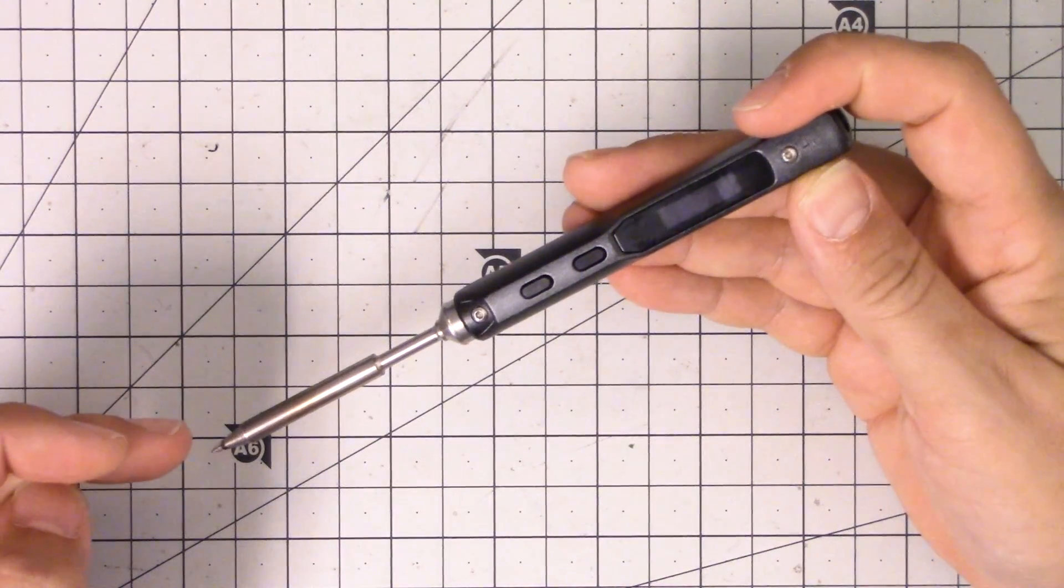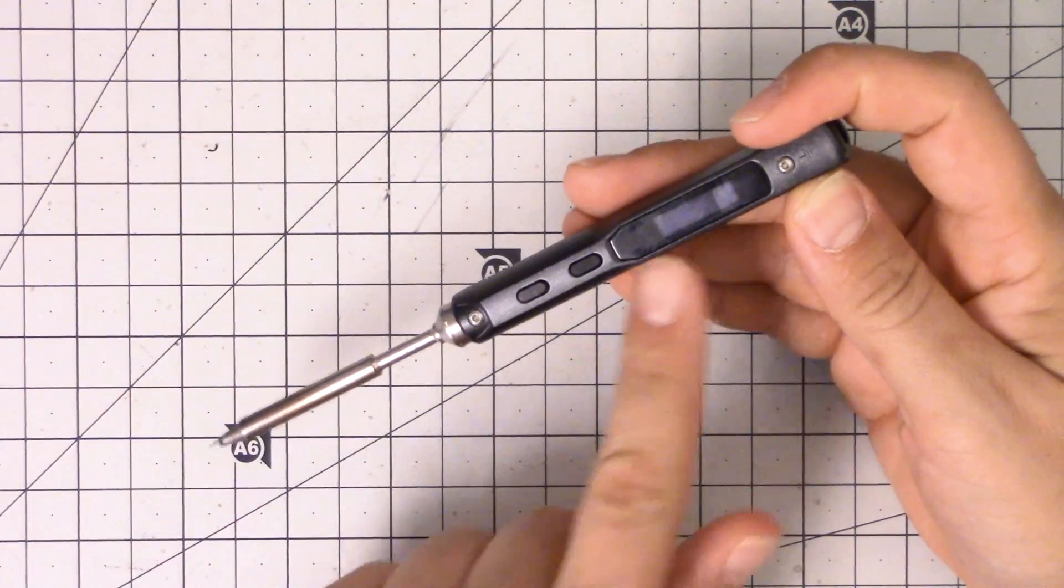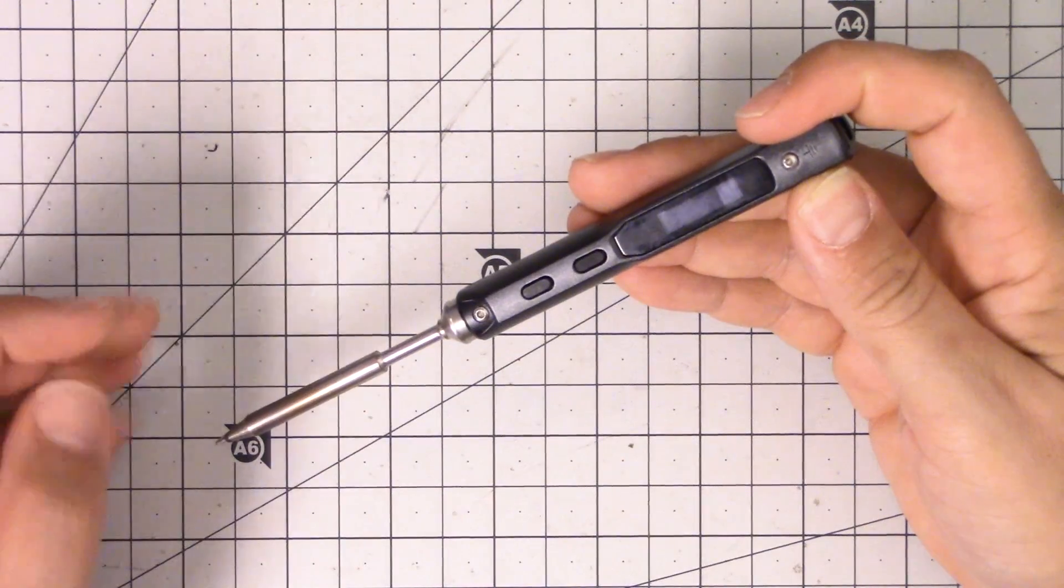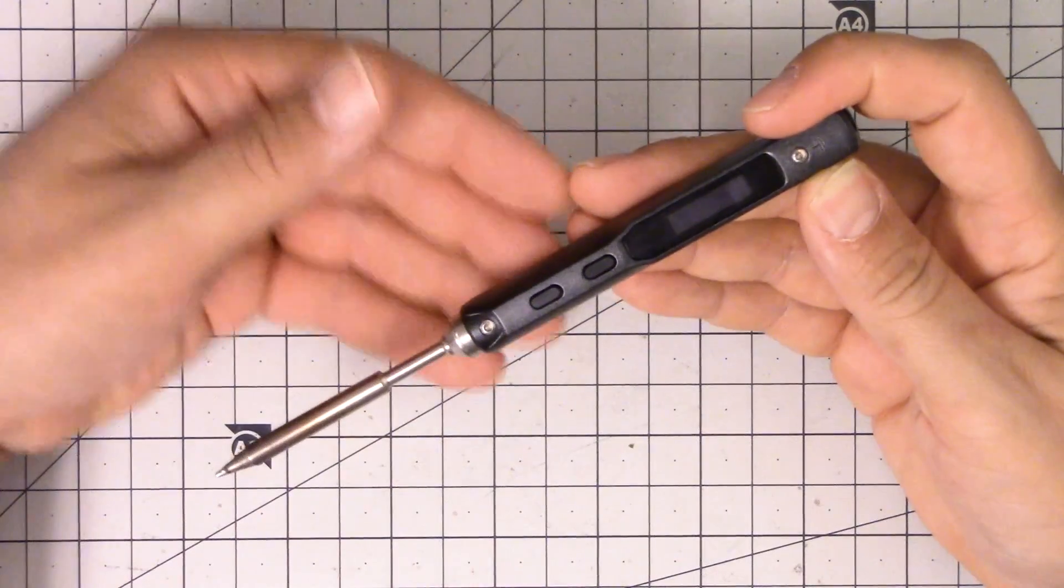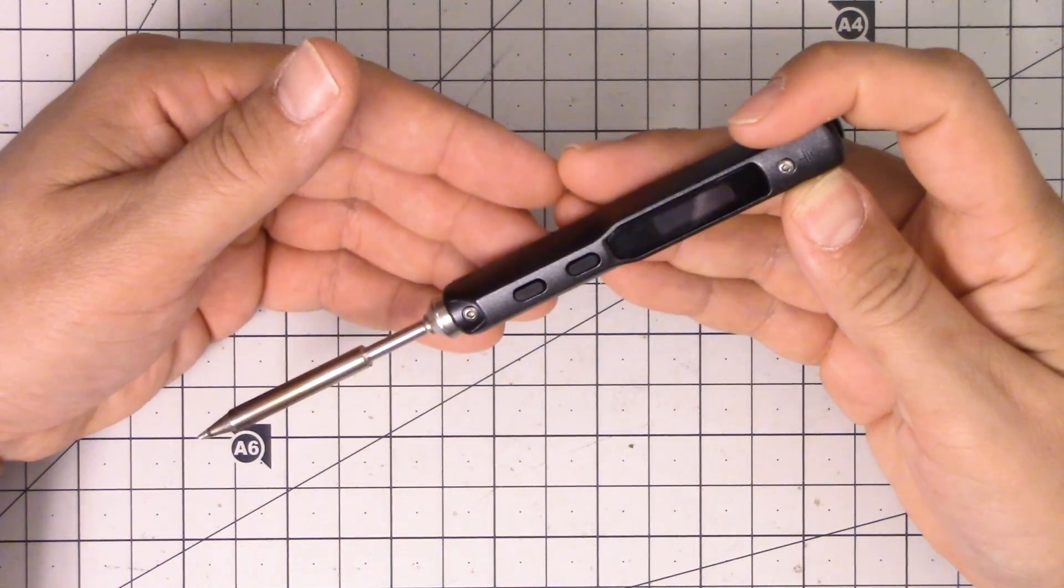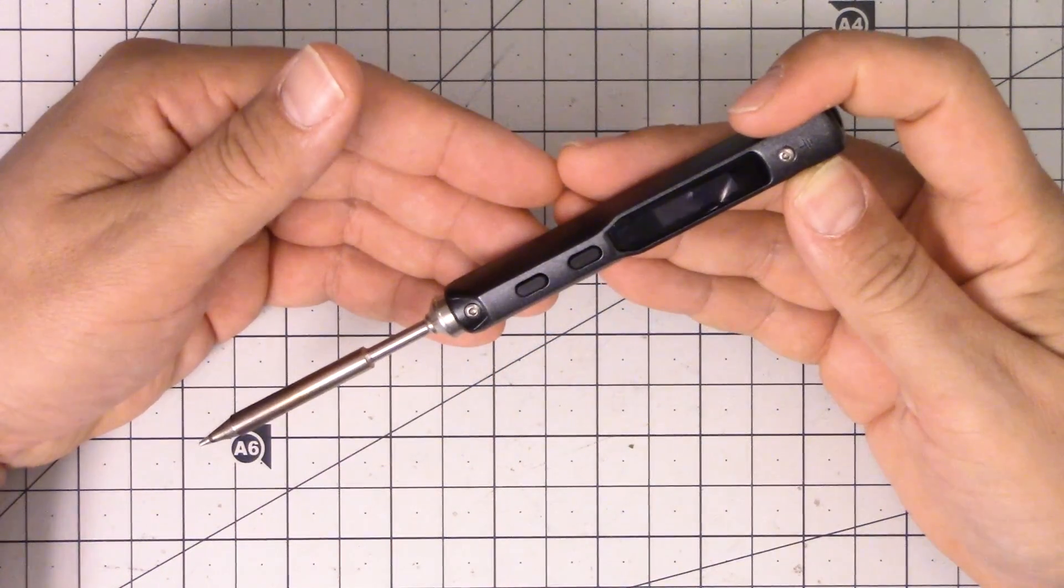When the tip gets below the set temperature, the soldering iron puts power through it to heat it up, and when it reaches the set temperature, the soldering iron stops applying power. Basically it holds the tip at exactly the temperature you want, or as close to it as possible.